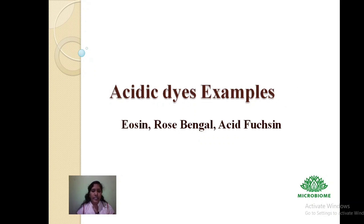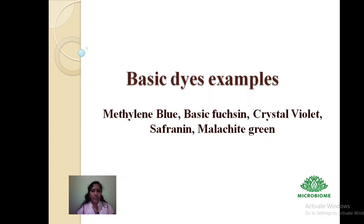Joseph Lister discovered carbolic acid. Acidic dyes contain acidic groups that have an affinity for basic tissue elements. Acidic stains are used to stain cytoplasm and other acidophilic cellular structures and tissues. Examples of acidic dyes are eosin, rose bengal, and acid fuchsin.